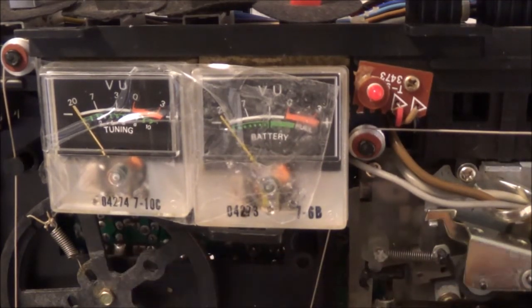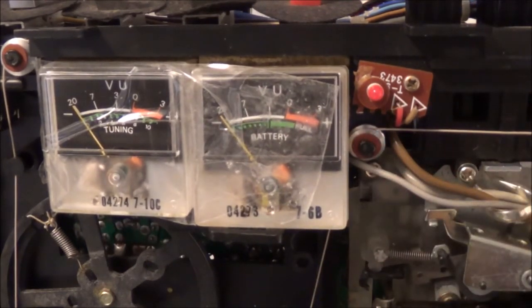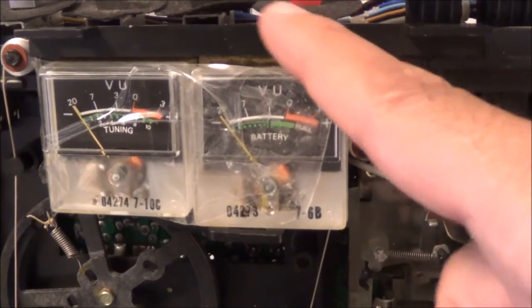And each one of these meters, one of the leads goes to ground and the other one carries basically the signal. Before that it goes through some diodes, there's two diodes, and then I think it goes back to what seems like to be the preamp.